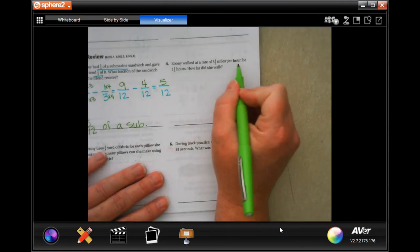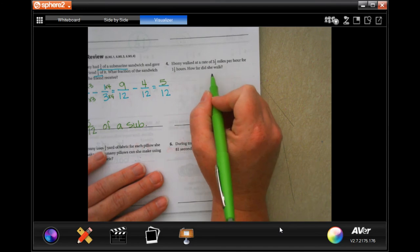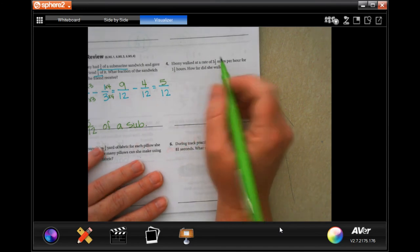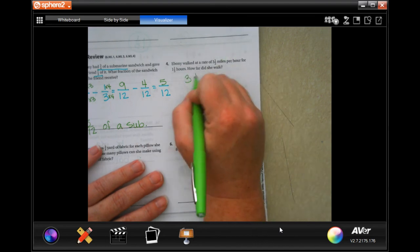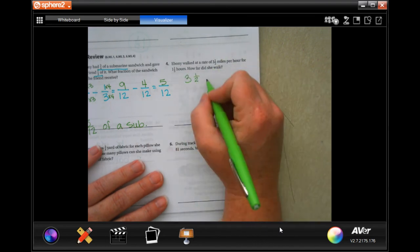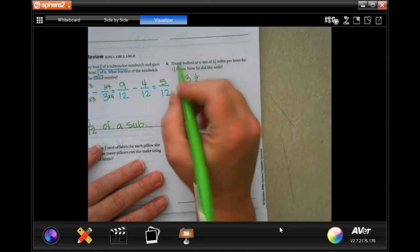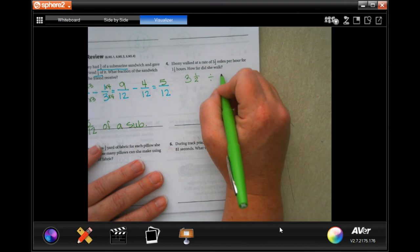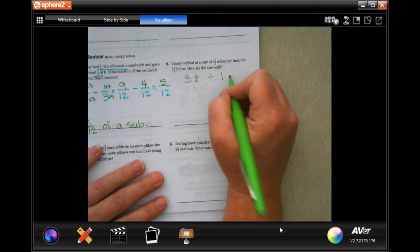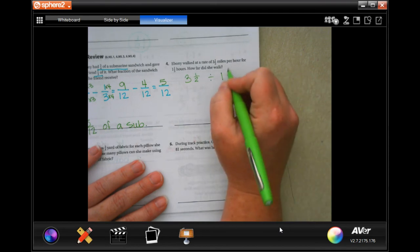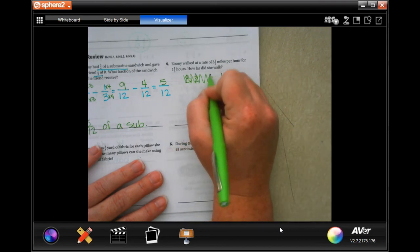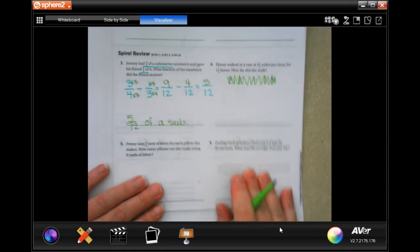All right. Ebony walks at a rate of 3 and a half miles per hour for one and a third hour. How far did she walk? So 3 and a half miles in one hour. So we need to divide that by 1 and a third hours. Nope, no way. I'm doing that wrong, guys. Give me a minute. I'll come back to number 4.